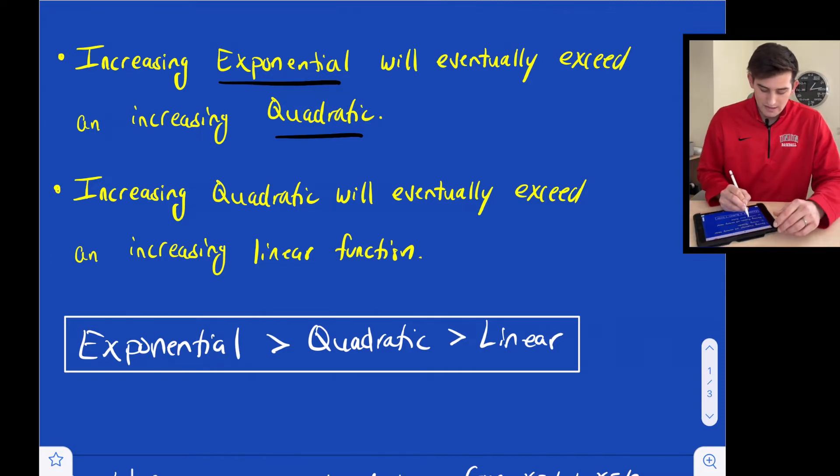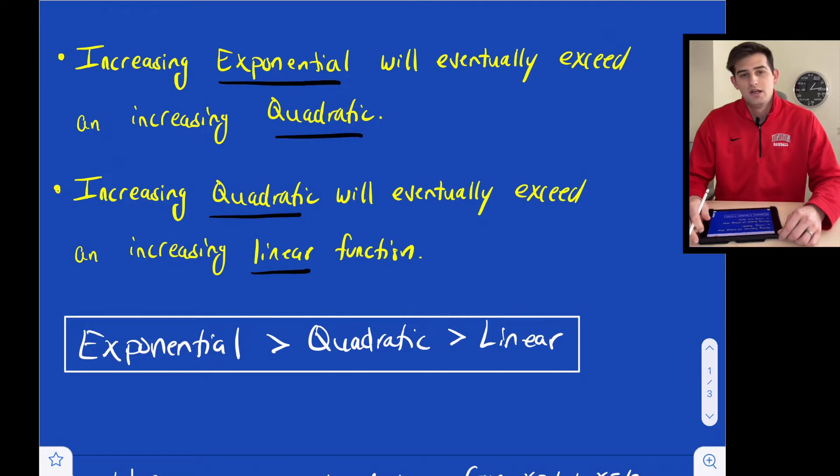Then we can say this: an increasing quadratic will eventually exceed an increasing linear function. So it gives us this comparison between these three functions. If they are all three increasing and we're comparing them over the same interval, the exponential is going to be the highest, number one, then number two will be the quadratic, and lastly, the linear function will be the lowest of the y values.